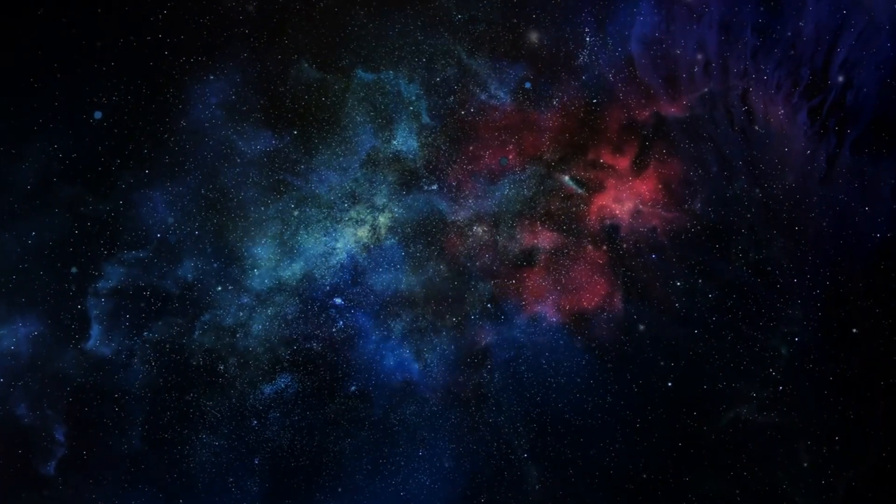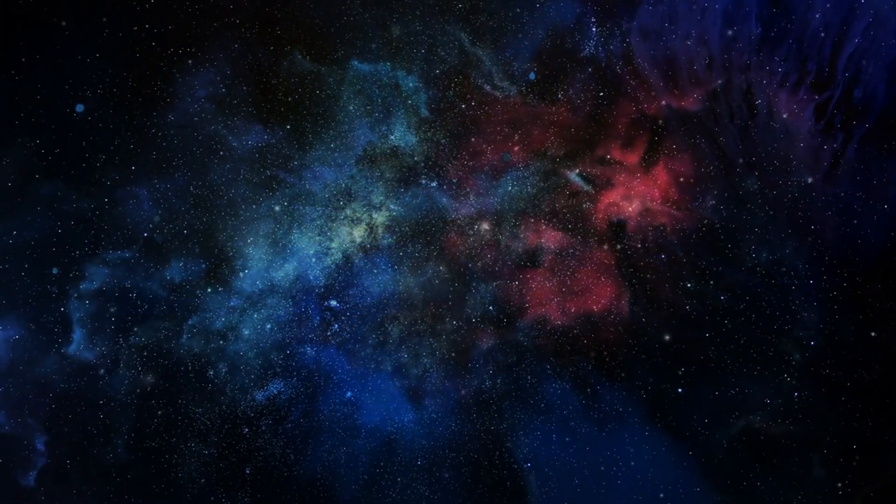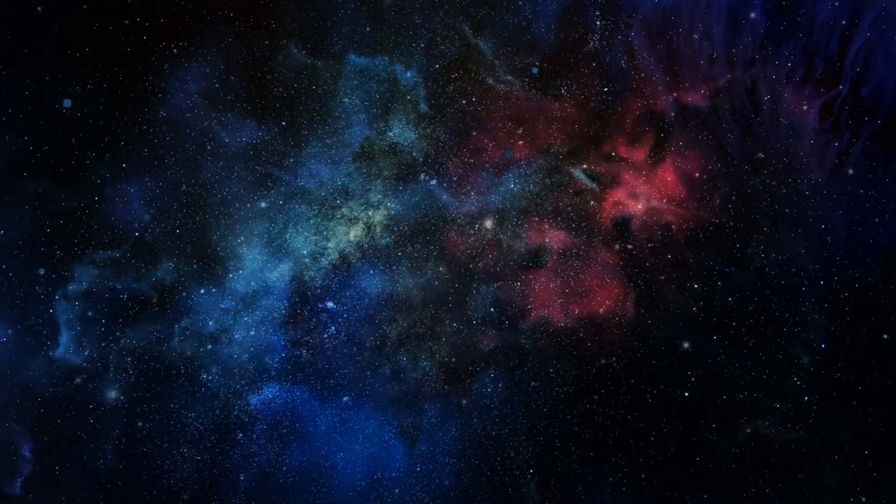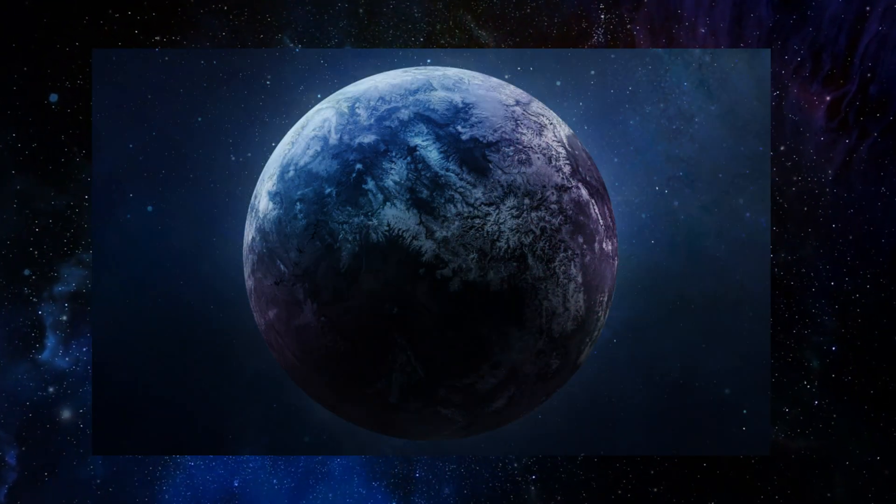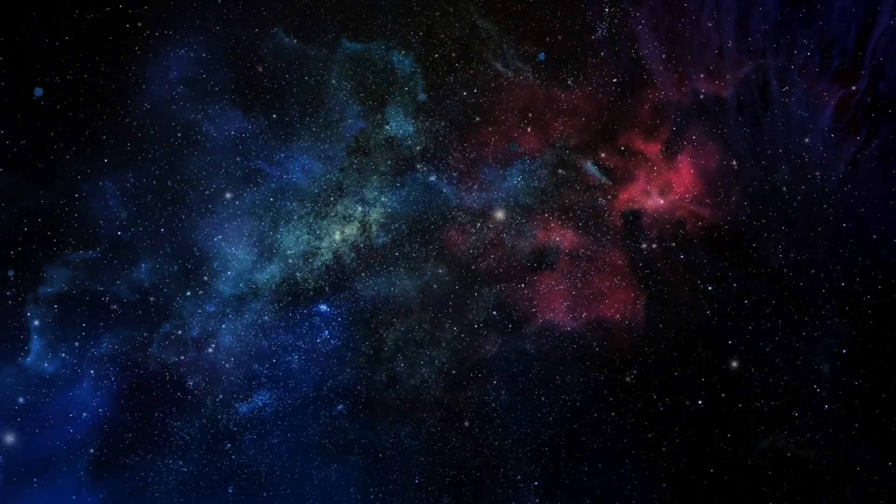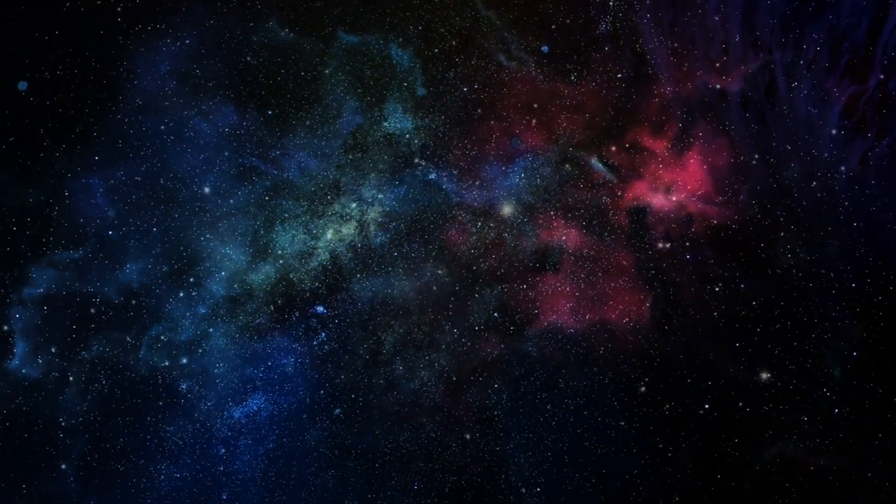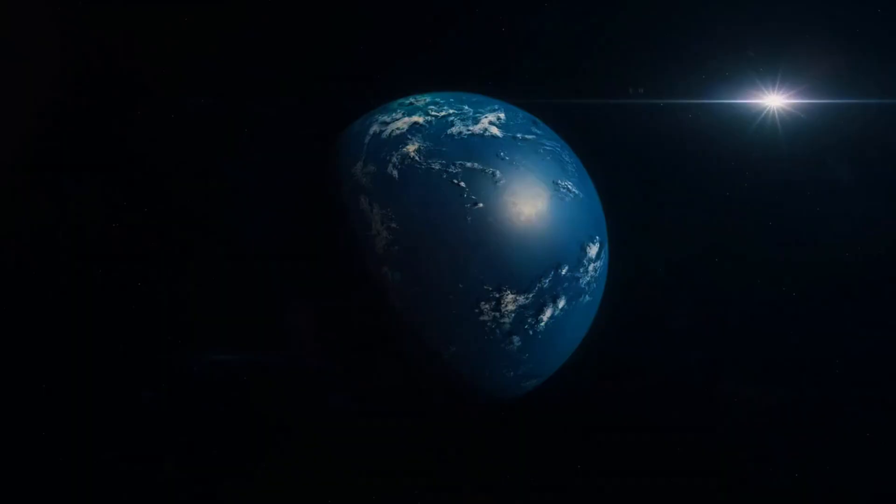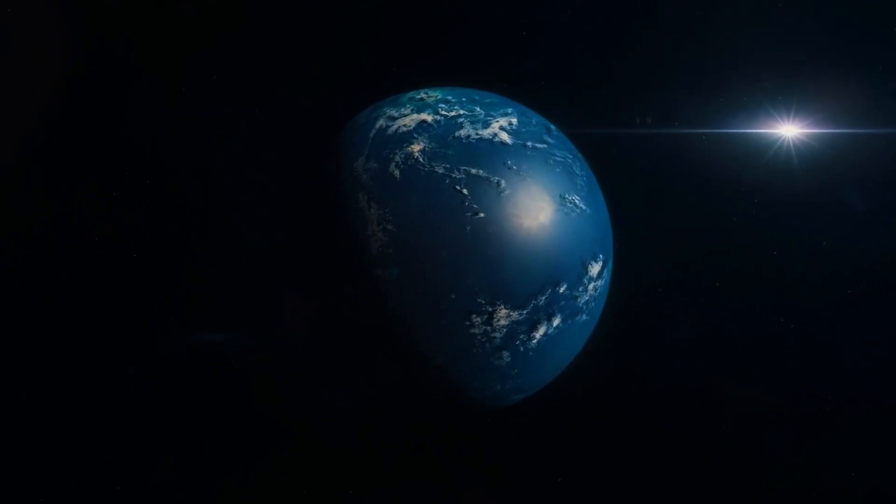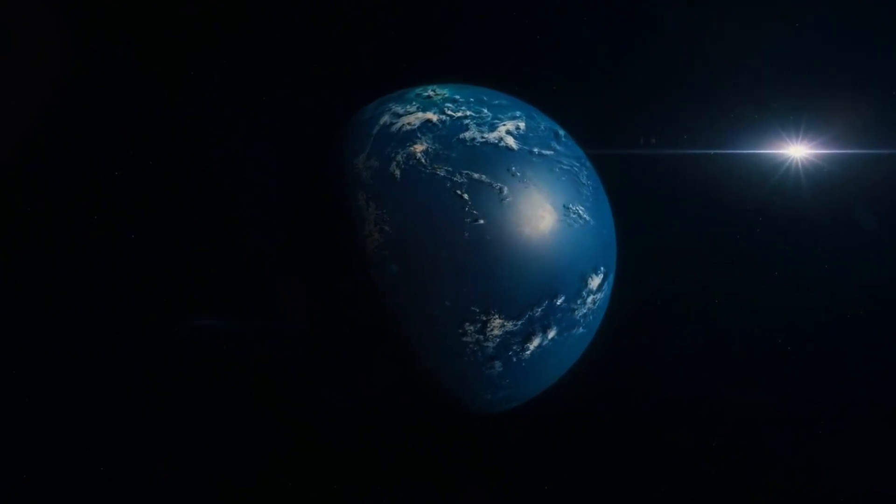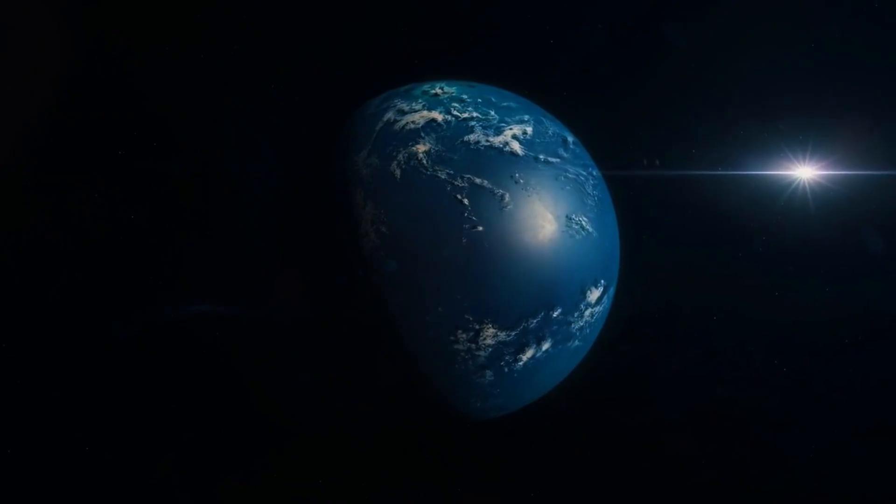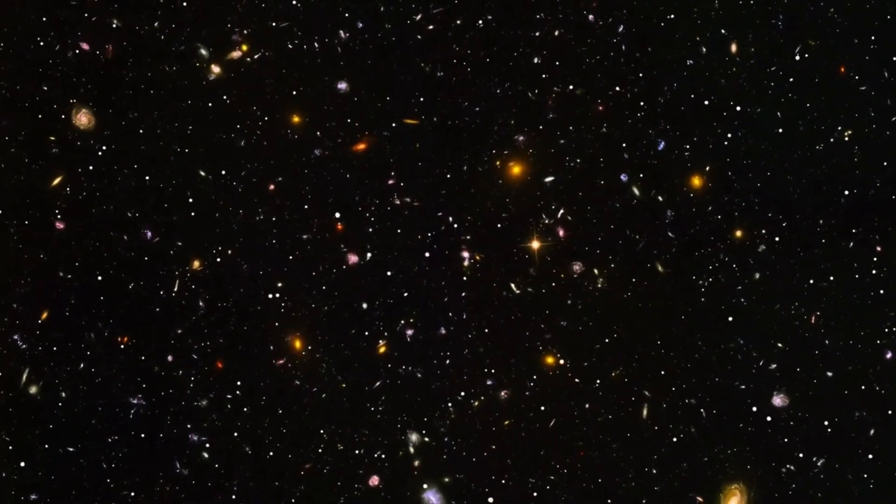In 2022, JWST turned its gaze to a planet called K218b, located 120 light-years away in the constellation Leo. This exoplanet orbits within the habitable zone of its star, the perfect distance for liquid water to exist. But here's where things get interesting.